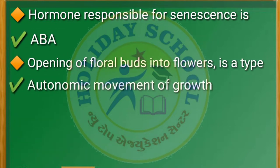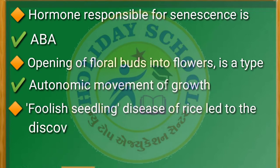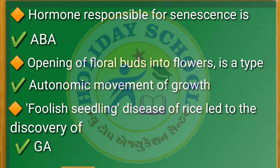Next question: anthesis is a phenomenon which refers to — the answer is opening of flower bud. Next question: the hormone responsible for senescence is — the answer is ABA. Next question: opening of floral buds into flowers is a type — the answer is autonomic movement of growth.